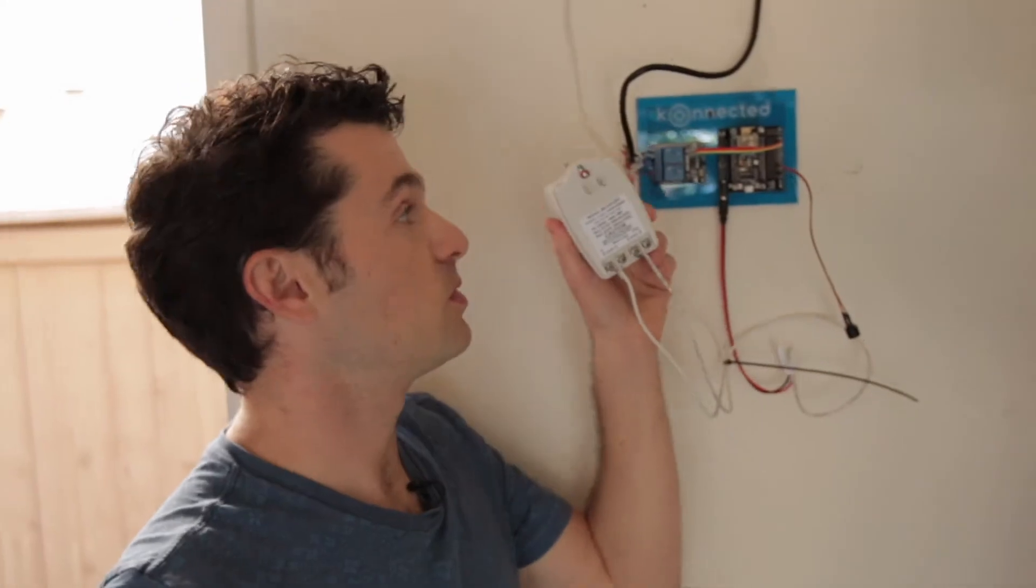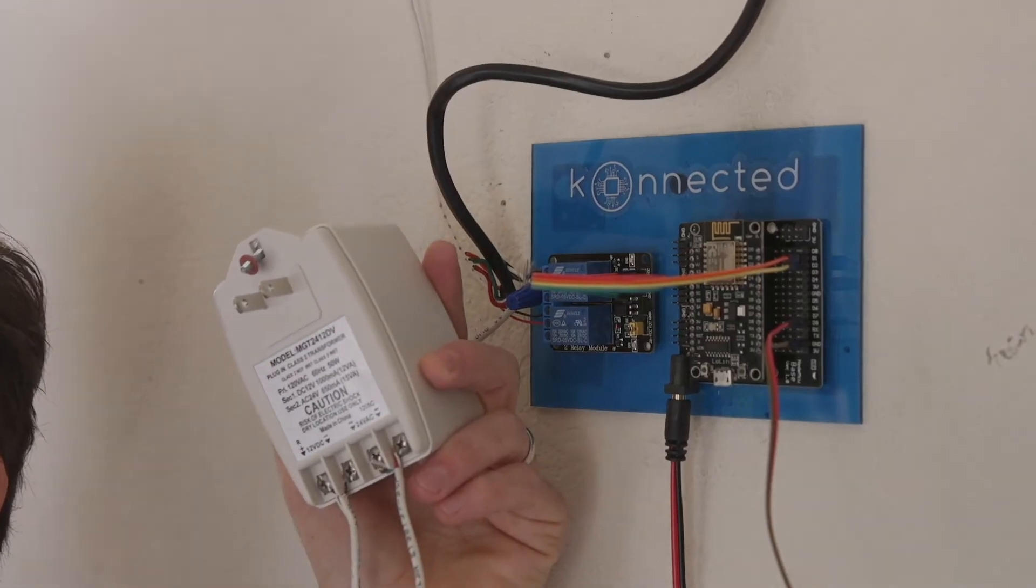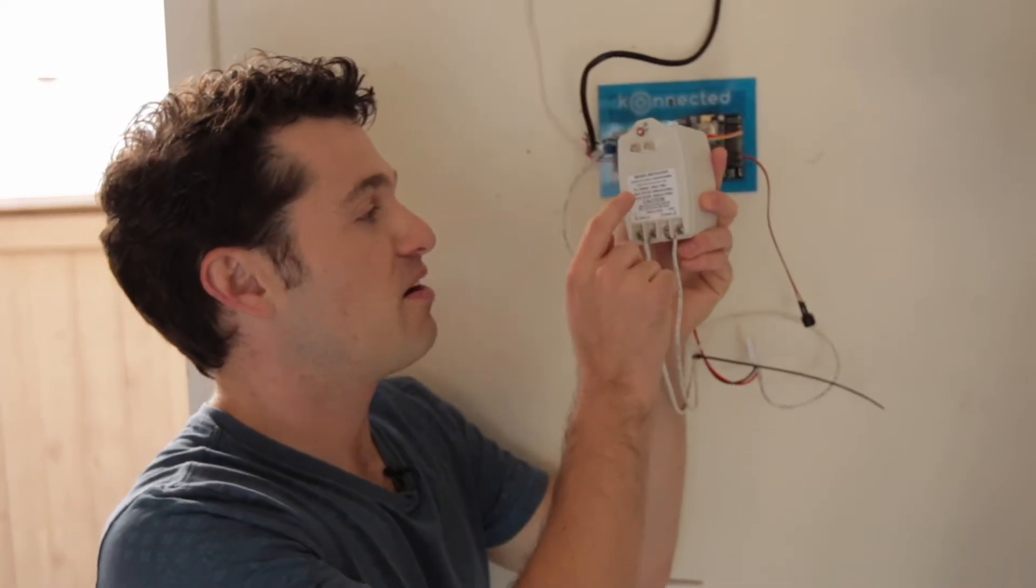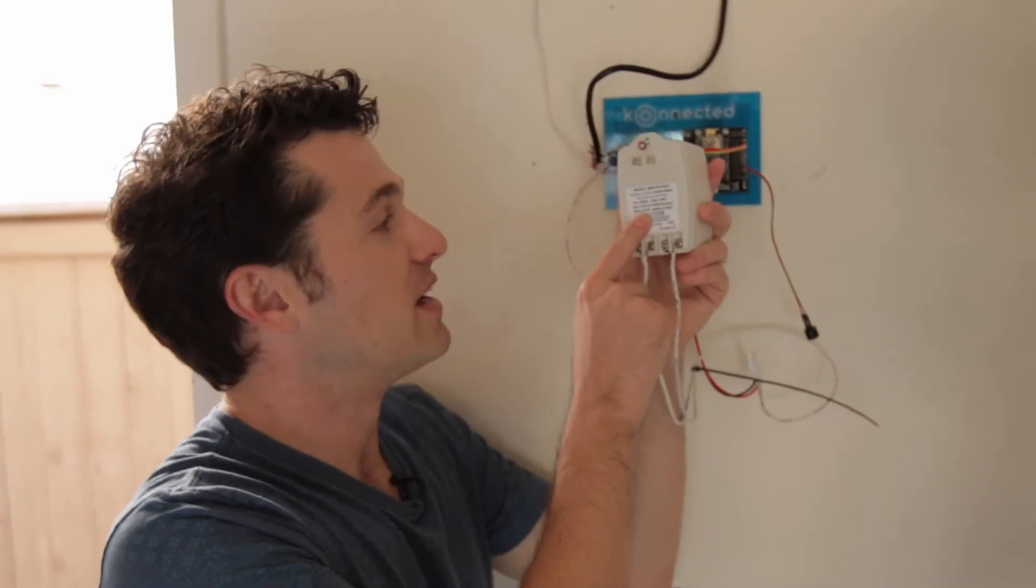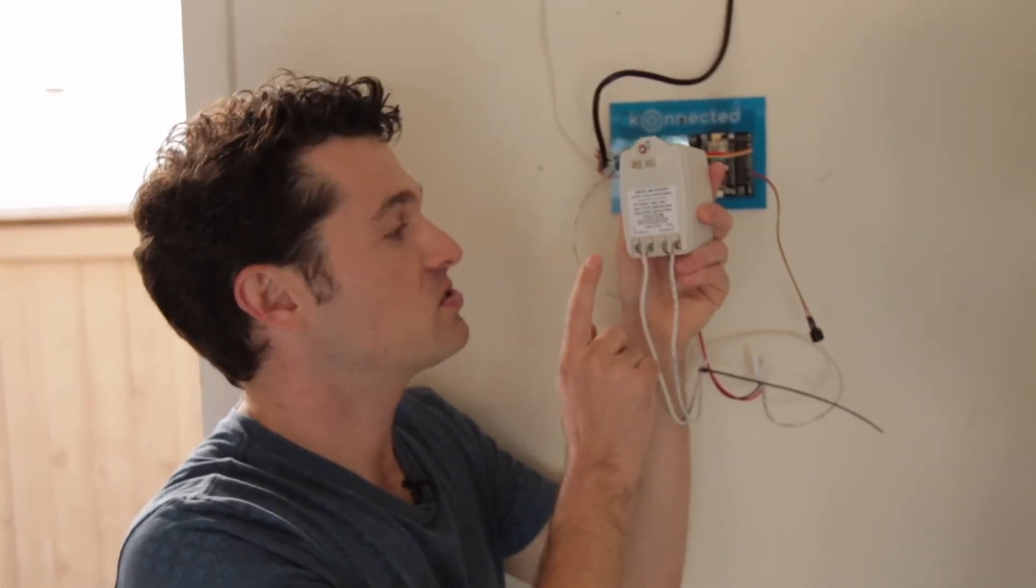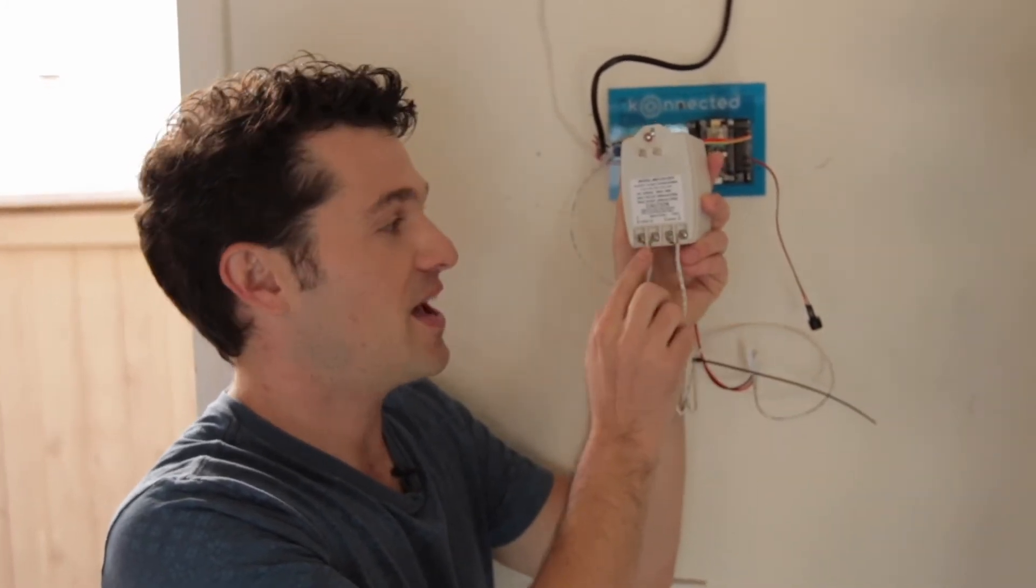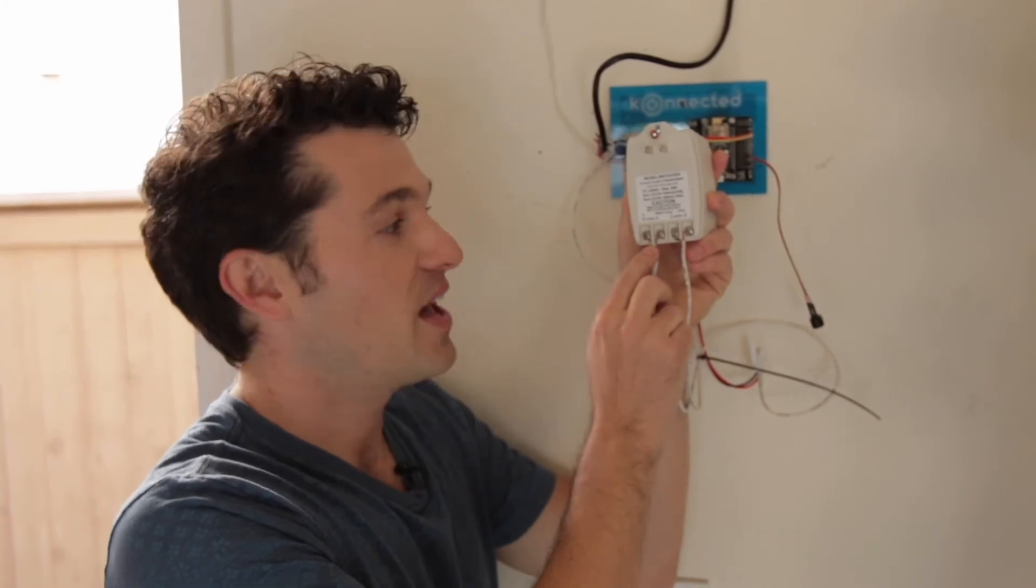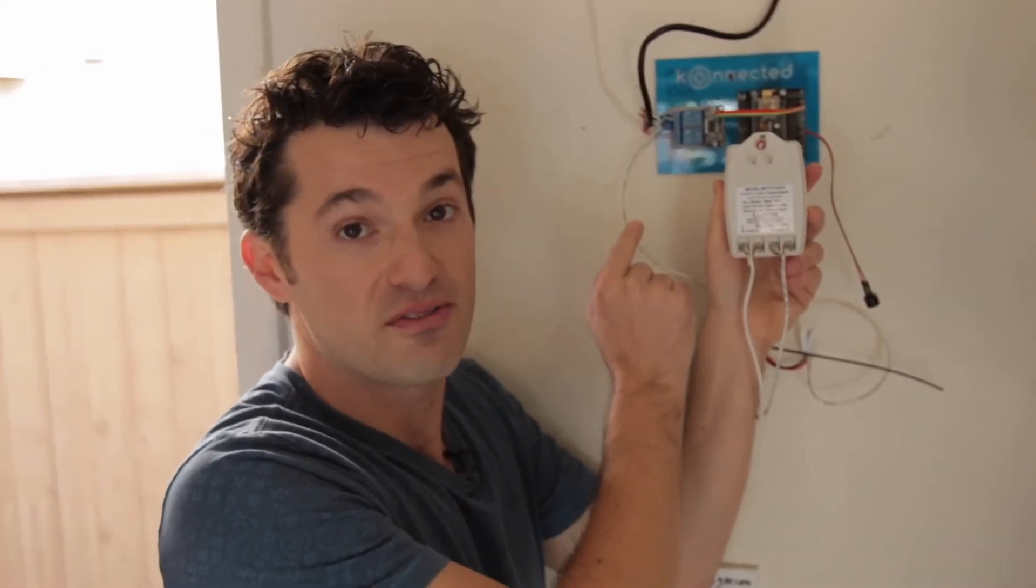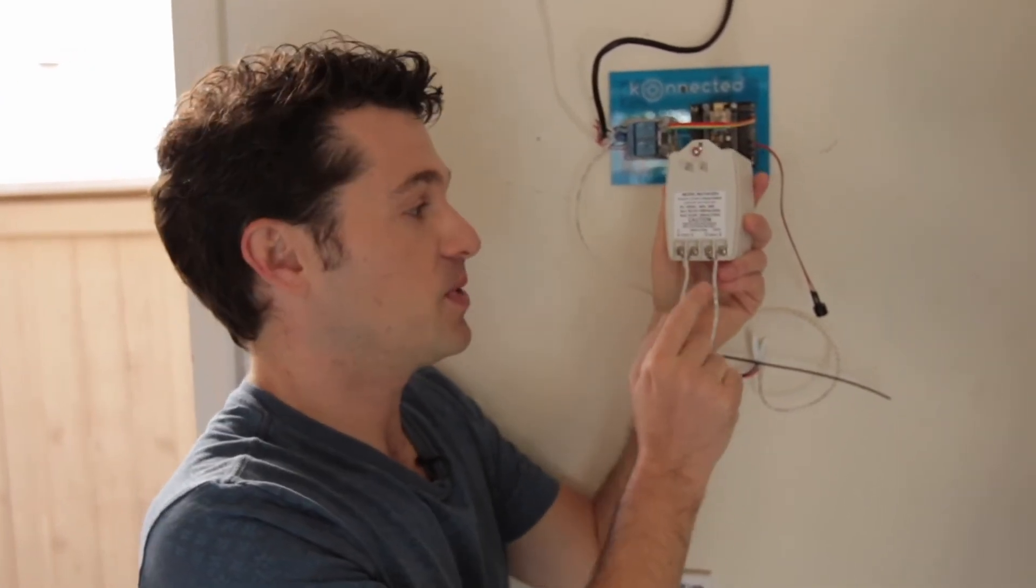Most sprinkler controllers, at least in the United States, operate on 24 volts or 26 volts AC power. It's actually fairly low power but I bought this really cool AC power transformer that has two different power outputs. We've got the 24 volt AC output and a 12 volt DC output. And why that's important is because the connected board runs off of DC power but the sprinkler controller needs AC power to actuate.